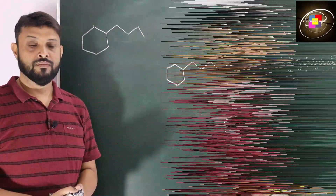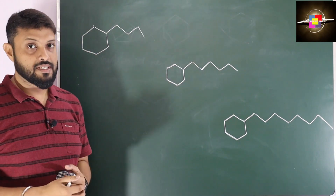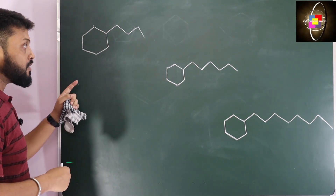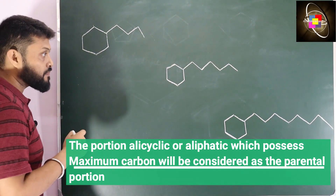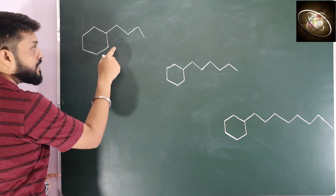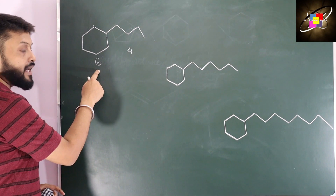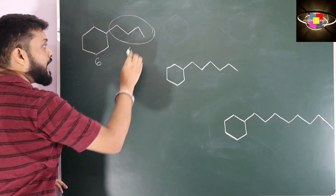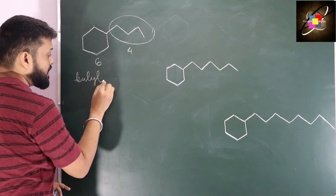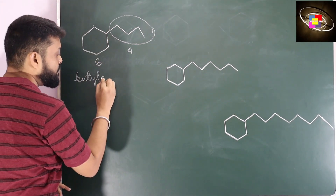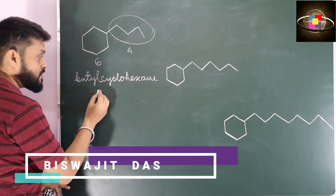Moving to the next one. Now if we have an aliphatic chain connected with the cyclic ring, there are two ways of naming this type of compound. According to the previous concept, we will give priority to the portion which possesses the maximum number of carbon. Here we have 6 carbons in the ring and 4 carbons in the aliphatic chain. So we give priority to the ring, and the aliphatic chain with 4 carbons acts as a substitution — that is butyl. Since this portion is acting as a substitution, we will end with -yl: butylcyclohexane.